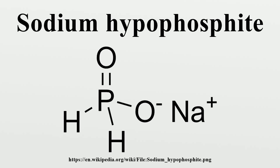Sodium hypophosphite is the sodium salt of hypophosphorus acid and is often encountered as the monohydrate, NaPO2H2·H2O. It is a solid at room temperature, appearing as odorless white crystals. It is soluble in water and easily absorbs moisture from the air.